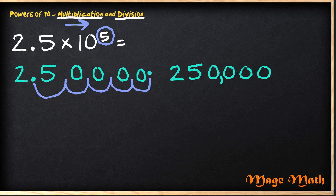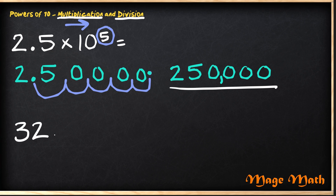Did you notice that the number got larger? This is because our decimal point moved to the right because we multiplied. Try one on your own: try multiplying thirty-two and four tenths multiplied by ten to the third power.